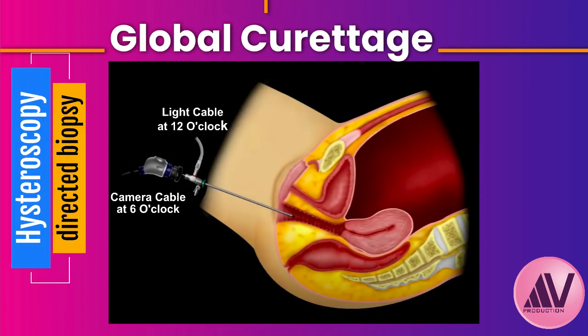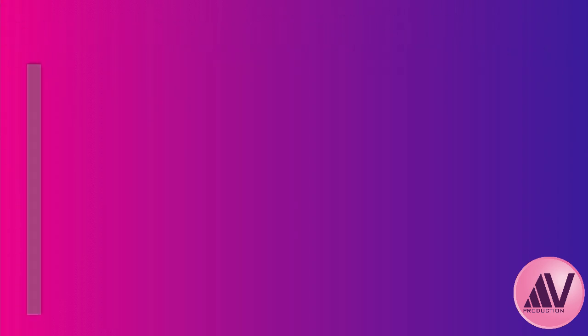Surgical sampling — a D&C — is needed if the office sample was inadequate or if bleeding persists after a negative office biopsy. Professor Virkud strongly advocates for global curettage, arguing that a standard D&C could miss a small patch of hyperplasia. Global curettage means meticulously sampling the entire surface of the endometrial cavity, including the corneal regions. He even suggests sending the entire sample to pathology, sometimes divided between two experienced pathologists.